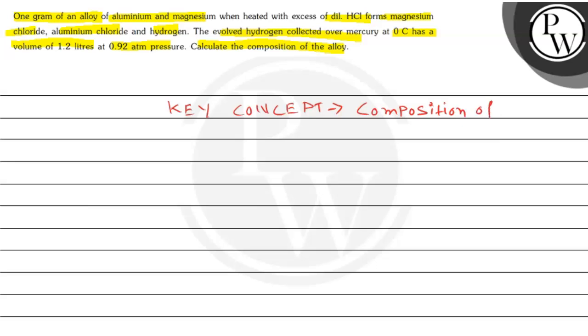If you don't know, metal plus dilute HCl reacts to produce MgCl2, AlCl3, and hydrogen gas. The hydrogen gas produced has a volume of 1.2 liters at pressure 0.928 atm. Now I'm looking at the number of moles of hydrogen by applying the ideal gas equation.